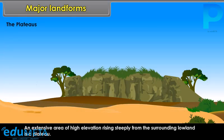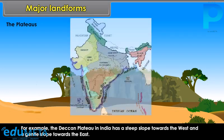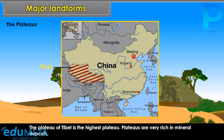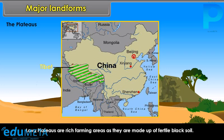Mountains are areas of dense vegetation which provide homes for animals, and forests are rich reserves of timber. An extensive area of high elevation rising steeply from the surrounding low land is a plateau. Some plateaus have a steep slope on one side only and gentler slopes on other sides. For example, the Deccan Plateau in India has a steep slope towards the west and a gentle slope towards the east. The Plateau of Tibet is the highest plateau. Plateaus are very rich in mineral deposits.